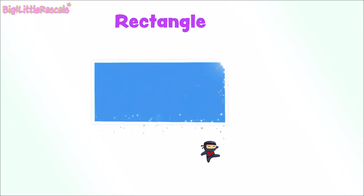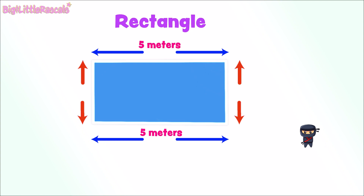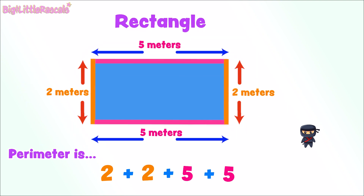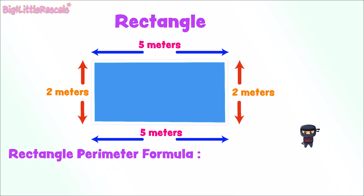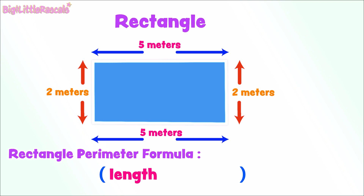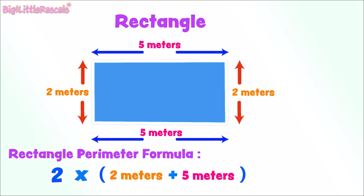But how about this shape? It's a rectangle! Rectangle also has 4 sides, but only the opposite sides are equal length. So this rectangle's perimeter is 2 plus 2 plus 5 plus 5, which equals 14 meters. Or, using the rectangle's perimeter formula: 2 multiplied by its length plus 2 multiplied by its width — or length plus width, then multiplied by 2 — equals 2 plus 5 equals 7, multiplied by 2, which equals 14 meters.